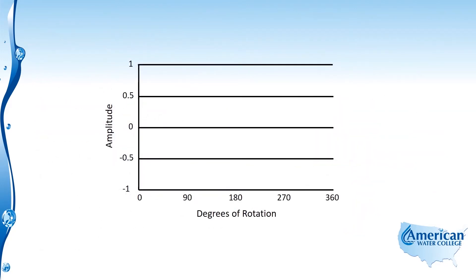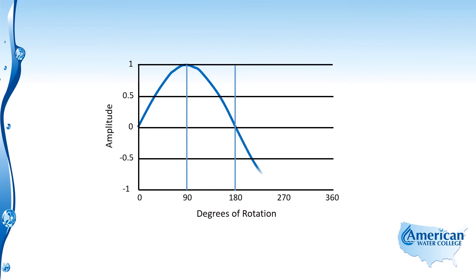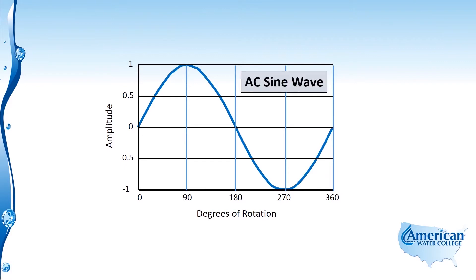Graphically, here's how it looks. Starting from zero, the sine wave approaches a maximum peak at 90 degrees of rotation. As it continues around, the sine wave goes back to zero at 180 degrees of rotation. It then continues down to a maximum negative peak at 270 degrees of rotation, and makes its way back up to zero at 360 degrees of rotation. This is a complete sine wave from zero back to zero.